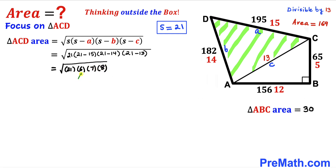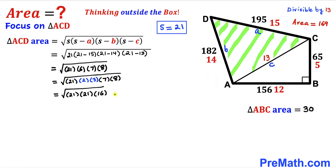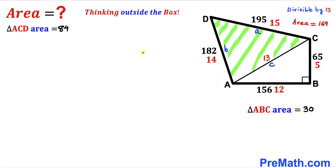Making an observation: 6 can be broken down to 2 × 3. Rewriting: the square root of 21 × (2 × 3) × 7 × 8. Multiplying 3 × 7 gives 21, and 2 × 8 gives 16. So we have the square root of 21 × 21 × 16. The square root of 21 × 21 is 21, and the square root of 16 is 4. Therefore the area is 21 × 4 = 84 square units. The area of triangle ACD is 84 square units.